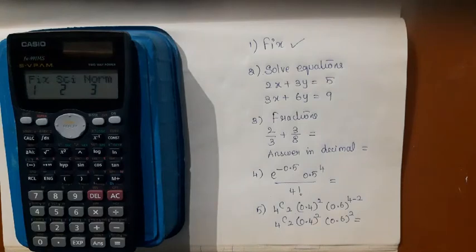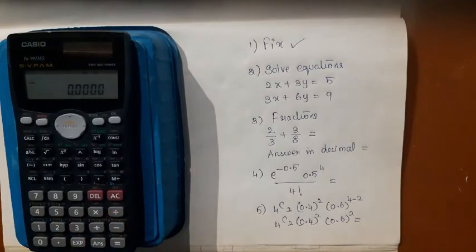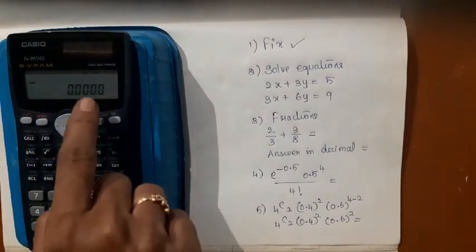You want to fix, right? So go for the first option and it is asking you how many decimal places are to be fixed. How many decimal places should I fix? Say four. That's all.